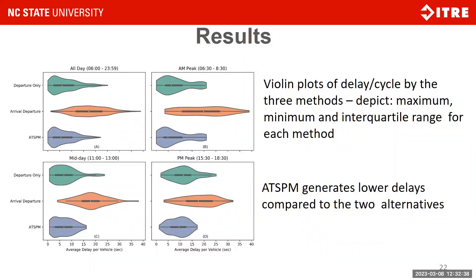Violin plots show the entire distribution of delay across the different time periods. The ATSPM method, colored in purple, has the shortest range of delay being reported, confined to the maximum red time one could encounter. The arrival-departure method had a very large range of average delay, and departure-only was somewhere in the middle. This highlights the differences in the range of delay that each method can provide.